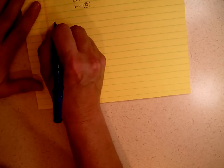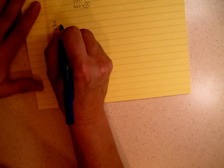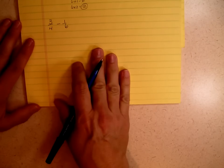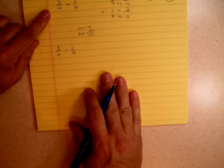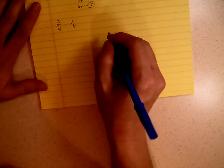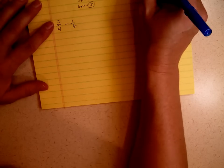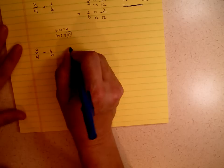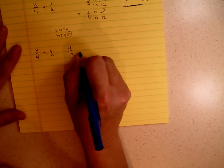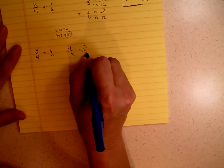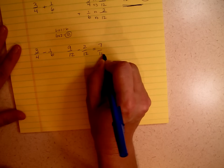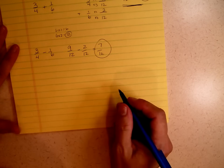What about subtracting? Three-fourths minus one-sixth. Well, we've already figured out what the common denominator is. We've figured it out here, and we've figured out that it was twelve. So it's going to be the same problem we have here, only instead of a plus, it's a minus. So that means I have nine-twelfths minus two-twelfths. Nine minus two is seven-twelfths. So my answer is seven-twelfths.